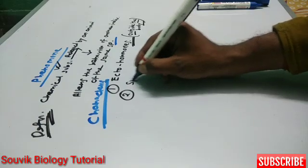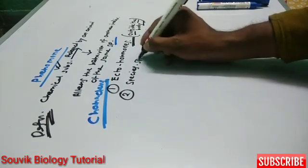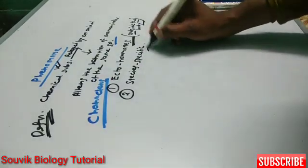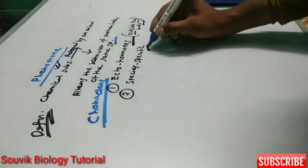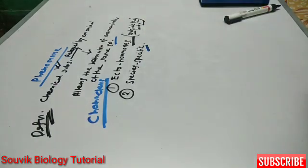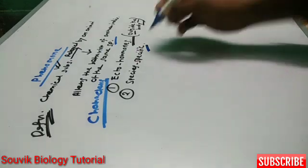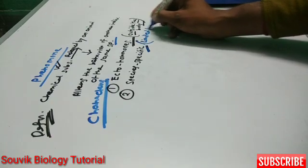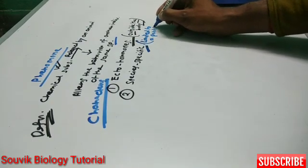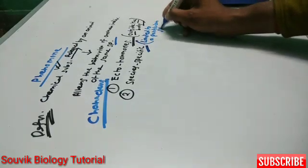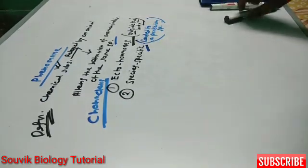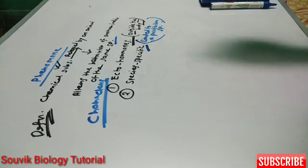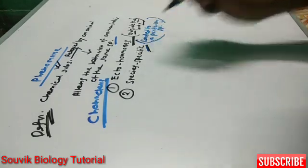Number two: pheromones are species-specific in nature. Why? Because the action of the pheromones is limited to a particular species, not another species. The actions are limited to a particular species — species-specific in nature.